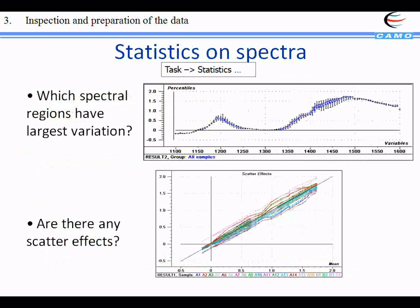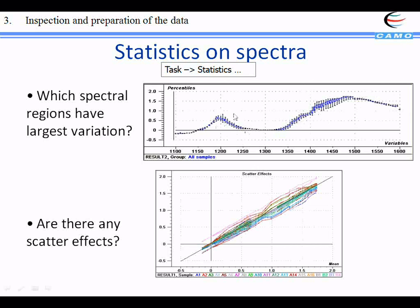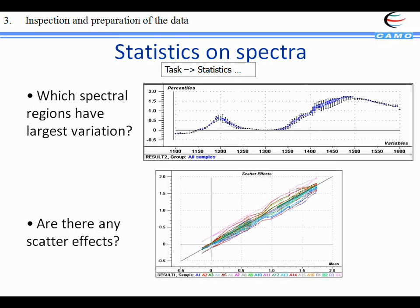Then you need to do some statistics, which will help you to first find regions that are varying a lot — if there is a lot of variation, there is likely a lot of information there. You can see this with the percentile box plot. You can also check for scatter effects. We have a plot where we plot every spectrum against the mean spectrum, so we can see if there is any deviation indicating scattering. Here you can see that we have a scattering effect in certain areas.